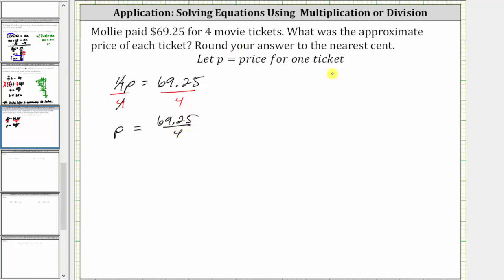Let's set this up as long division. Because the divisor is a whole number, we move the decimal up into the quotient and divide like we normally do. We first determine how many fours in six, which is one. One times four is four. Subtract, the difference is two.